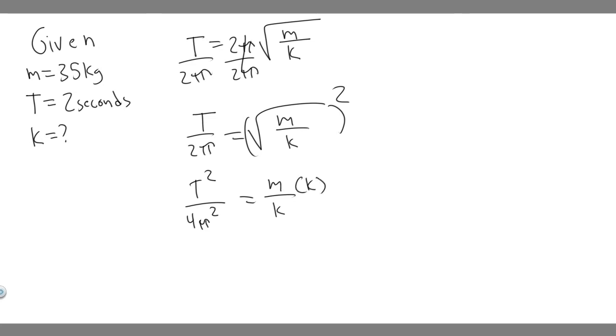Then we can multiply both sides by k. And then divide both sides by this term. So you're going to get k equals m times 4π squared divided by t squared. You should know how to manipulate this stuff by now.